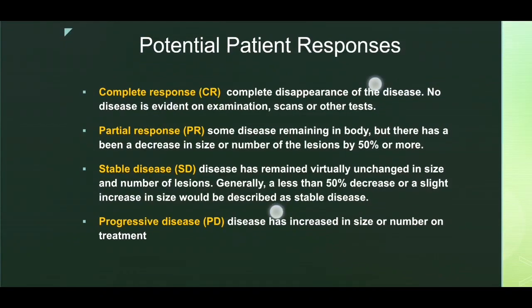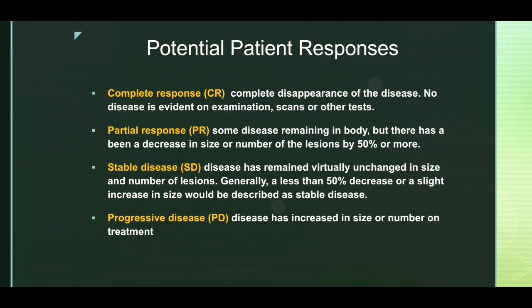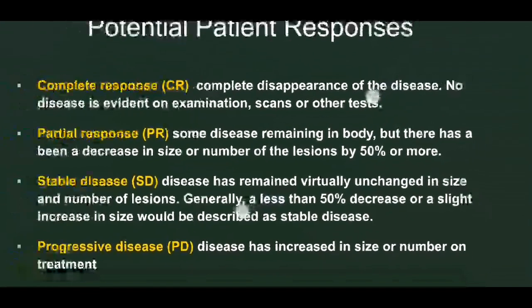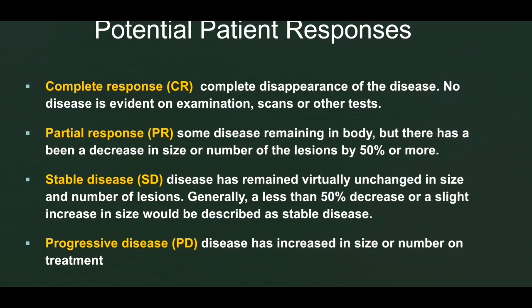After using a drug, there are four possible patient response outcomes. The patient may develop complete response — complete disappearance of the tumor — detected by clinical history, clinical examination, tumor markers, and imaging tests like CT studies. Partial response means there is a response to treatment but it is not complete; it is more than 50% tumor reduction.